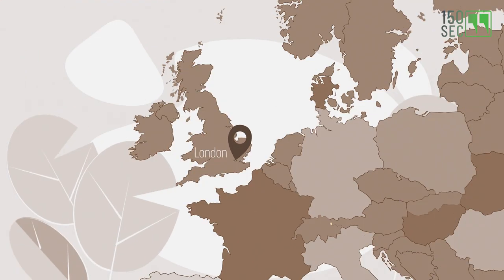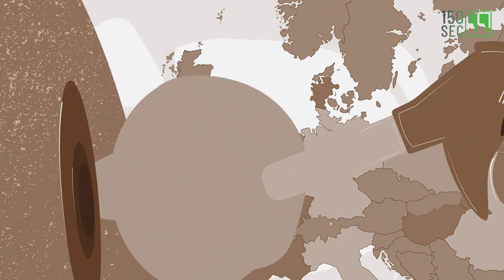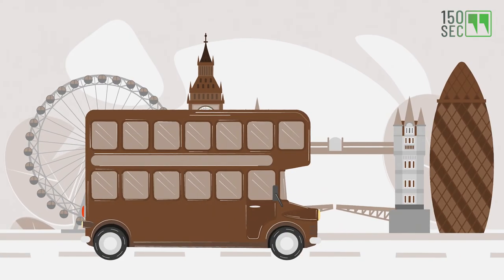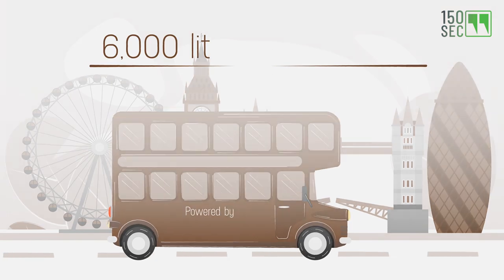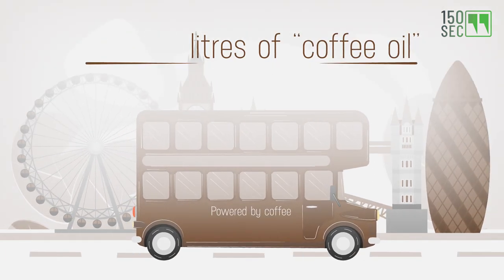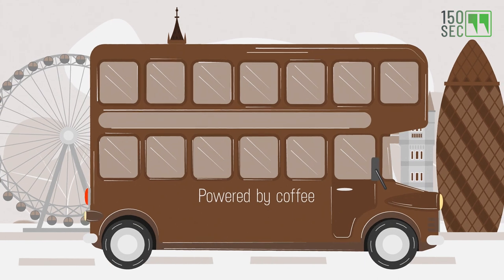The residues of coffee grounds hide more secrets, such as a significant amount of oil. A company in the UK extracted 6,000 liters of this coffee oil from waste and turned it into biofuel to power some of London's iconic red buses.